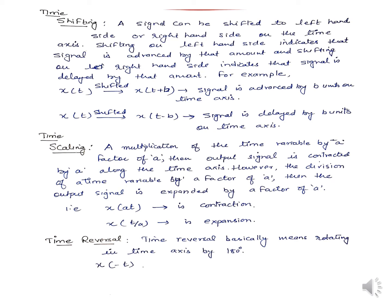Good morning everyone. Today I am going to start a new topic which is time shifting, scaling, and time reversal. A signal can be shifted to the left hand side or right hand side on the time axis. Shifting on the left hand side indicates the signal is advanced by that amount; shifting to the right hand side indicates that the signal is delayed by the same amount. X(T+B) indicates the signal is advanced by B units, and X(T-B) indicates the signal is delayed by B units on the time axis.